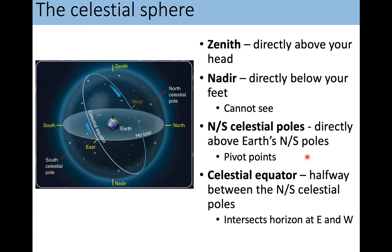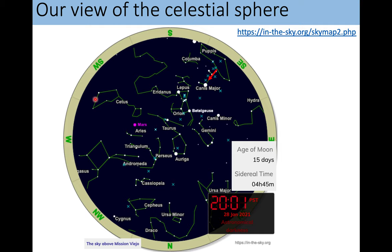So here are some definitions. The zenith is right above your head. The north and south poles align with Earth's poles, and the celestial sphere rotates around that pole. The celestial equator is essentially the halfway point between the north and south celestial poles — it is the equator of the celestial sphere. The celestial equator will always intersect your horizon at the east and west points. The angle of the celestial equator depends on where you're standing on Earth, but it always intersects your horizon in the east and west.